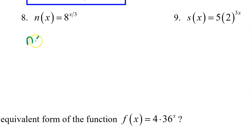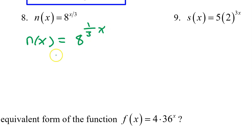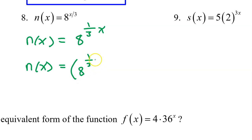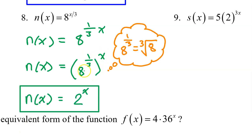Number 8 is almost the same as number 7. n of x equals 8 to the 1 third times x power, so n of x can be written as 8 to the 1 third power all raised to the x power. 8 to the 1 third power is the cube root of 8, which is 2. So the answer is 2 to the x power.